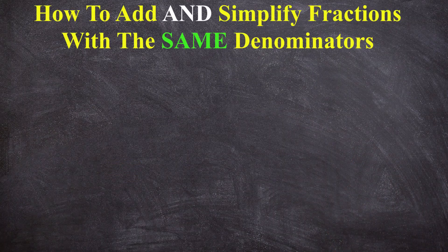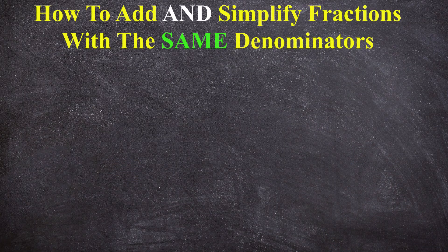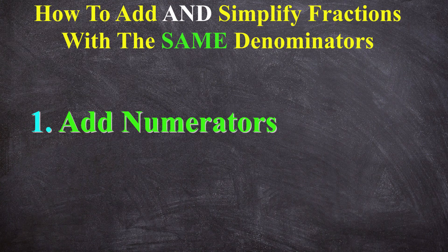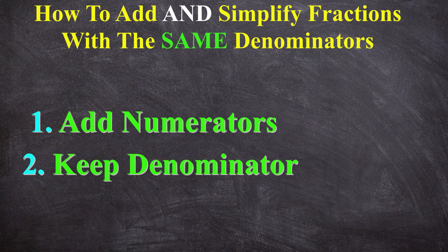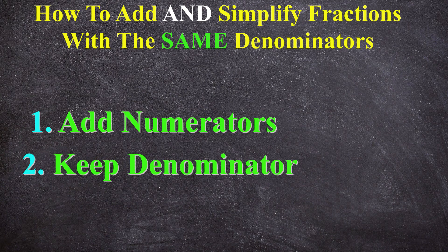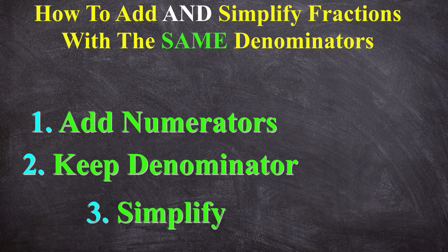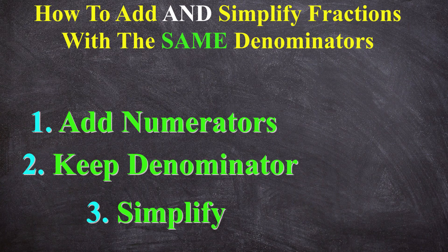So that's how you add and simplify fractions with the same denominators. Remember the three steps: firstly you add the numerators, and in the second step because the denominators are the same you keep the denominator, and then with that result you go to step three which is you simplify the resulting fraction by dividing numerator and denominator by the highest common factor.